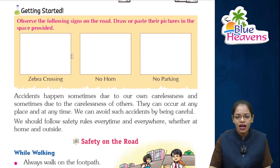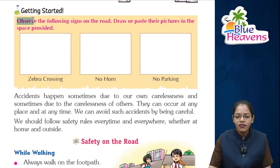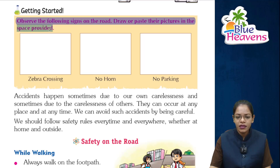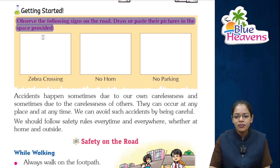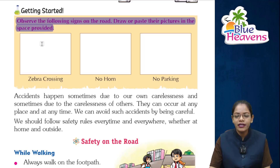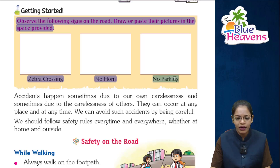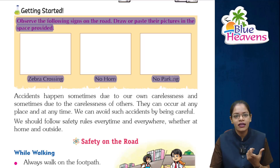Students, observe the following signs on the road and draw or paste their pictures in the space provided. In the blank space, draw or paste the road signs: zebra crossing, no horn, and no parking. You can either draw or paste these signs.